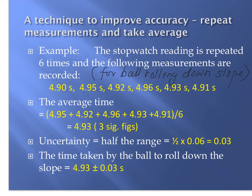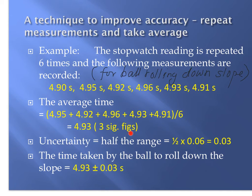A technique to improve accuracy is to take repeat measurements and calculate the average — this reduces the uncertainty. For example, a stopwatch reading is repeated six times while timing a ball rolling down a slope. To find the average, add all six values and divide by six. The average is 4.93 seconds — three sig figs, matching the raw data. This calculated value cannot be more accurate than the raw data.